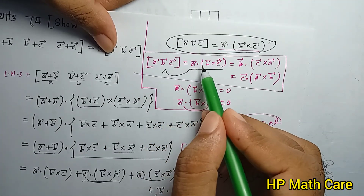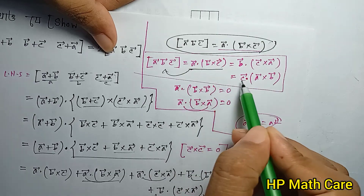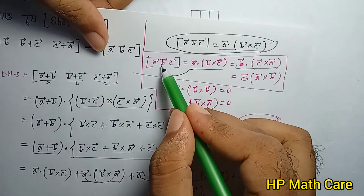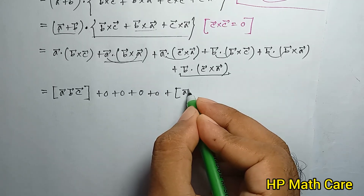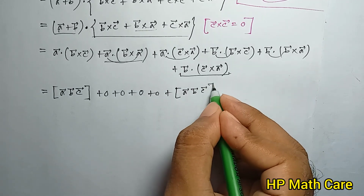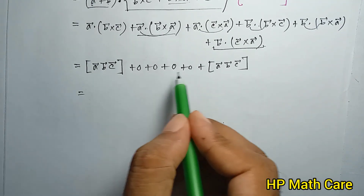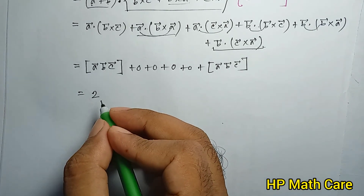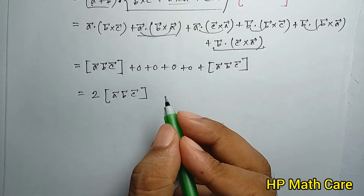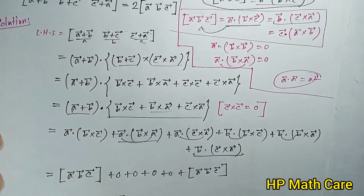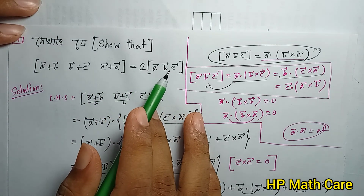So box [a+b, b+c, c+a] equals box [a,b,c] plus box [a,b,c] plus box [a,b,c] equals 3 box [a,b,c]? Wait — checking: it equals box [a,b,c] plus box [a,b,c] equals 2 times box product [a,b,c]. Therefore box [a+b, b+c, c+a] equals 2 times box product [a, b, c]. Proven.